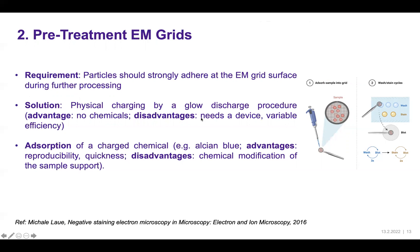To improve hydrophilicity so aqueous samples can attach, one way is plasma cleaning or glow discharge, which creates a temporary charge lasting about 20 to 30 minutes, requires no chemicals but needs a specialized device and may not be uniform. You can also use a chemical approach to modify the surface of the support film, such as using alcian blue, though this has the disadvantage of introducing chemical modification.